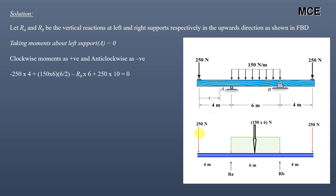The moment of the 250 newton point load about support A is minus 250 into 4, since it acts in the anti-clockwise direction. The moment of the UDL, converted to a point load of 150 into 6 newtons, acts at a distance of 3 meters from support A, giving a clockwise moment of 150 into 6 into 6/2. The moment of RB about support A is anti-clockwise with magnitude RB into 6.